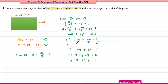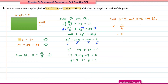Now we find the value of x. Substituting y = 9 into equation 3: x = 72 ÷ 9 = 8. And substituting y = 8: x = 72 ÷ 8 = 9.